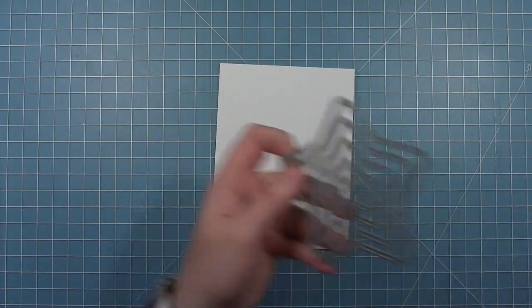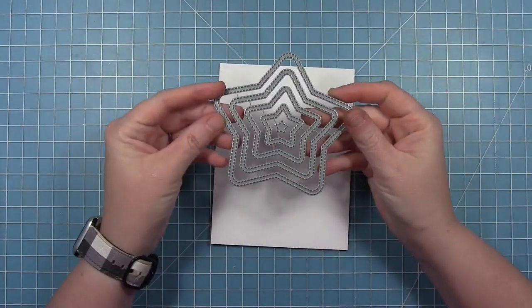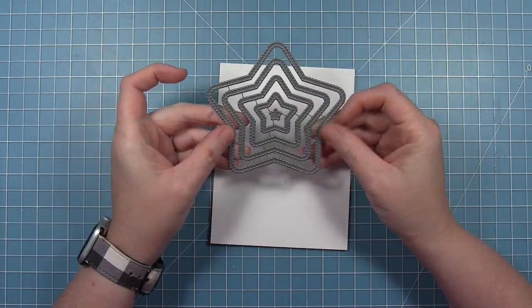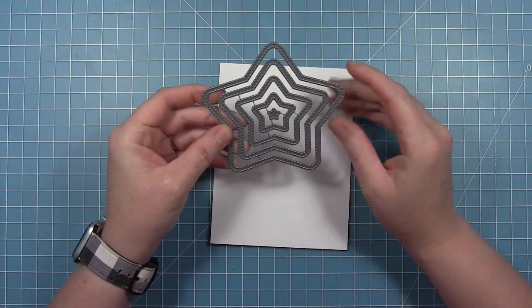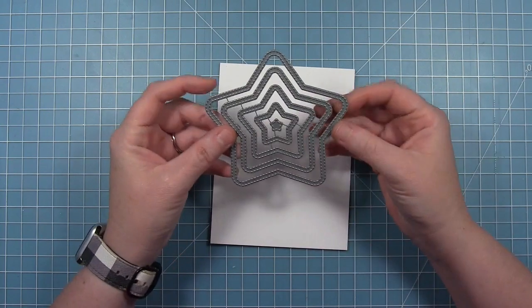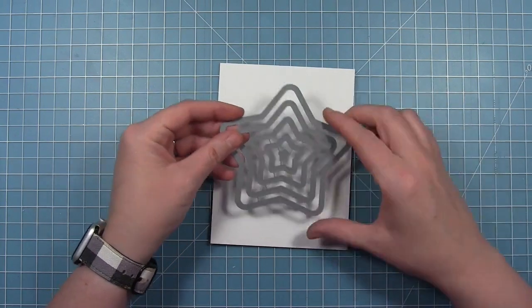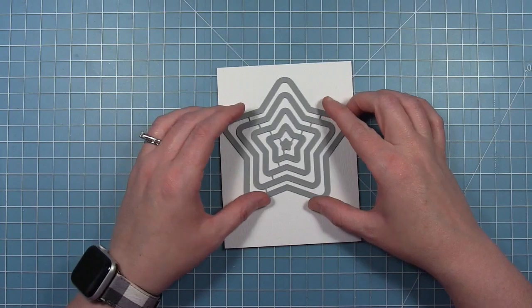Hello and welcome to another Lawn Fawn video. Today we're taking a look at the new Just Stitching Stars dies. These dies will cut two lines of stitching detail for each of these stars, and that tiny star in the middle will cut one little stitching detail.